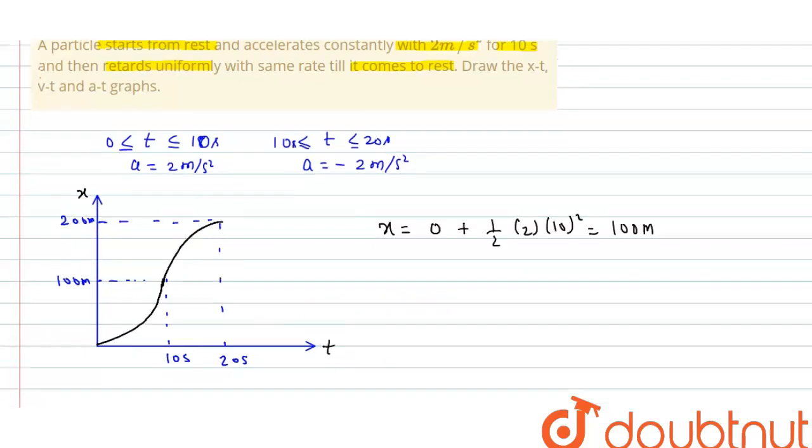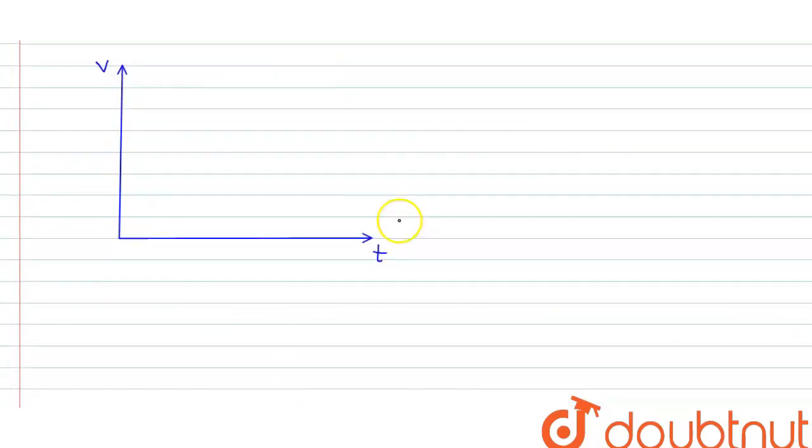Now we have to draw the velocity versus time graph. Since this is constant acceleration motion, according to the equation v equals u plus a t, our graph should be straight.